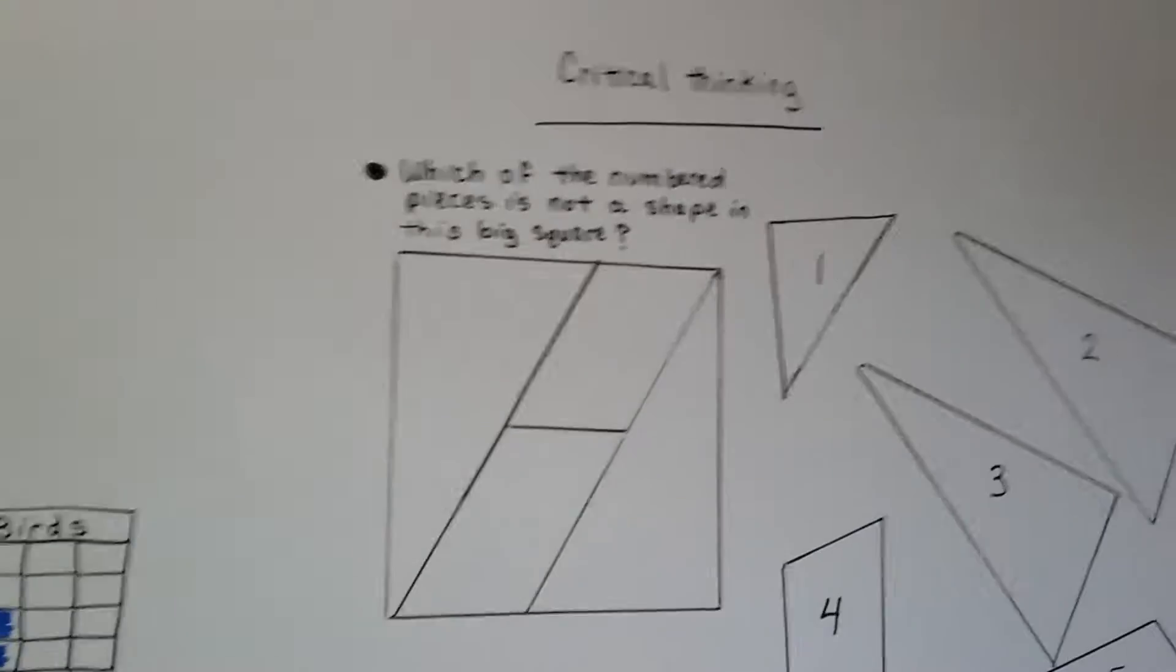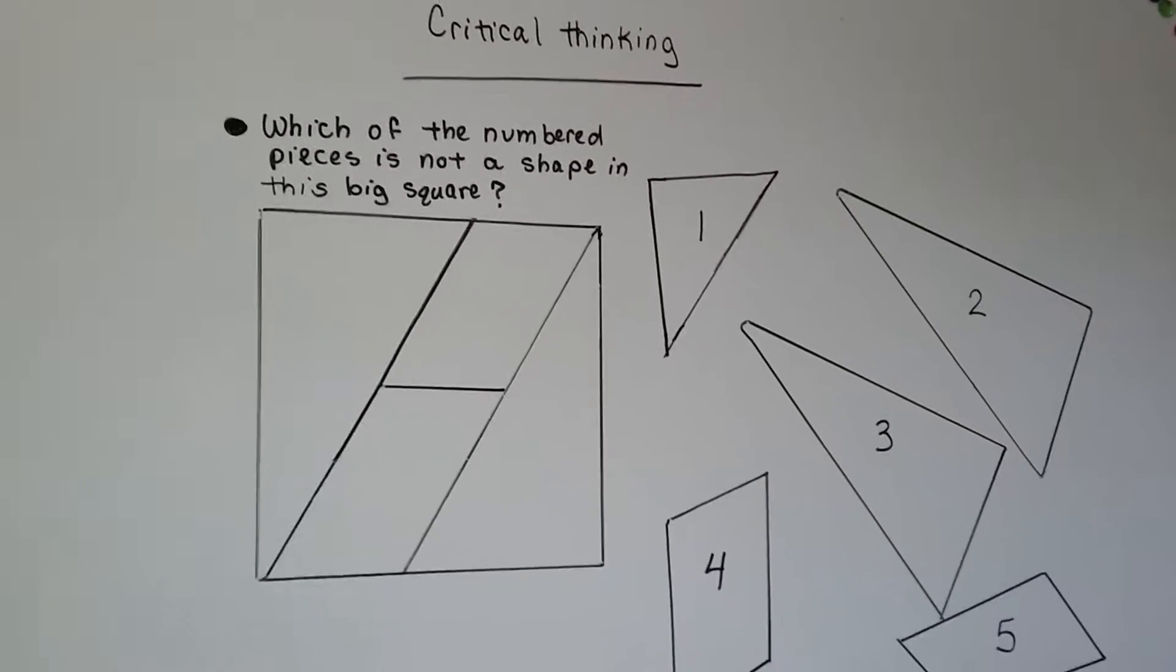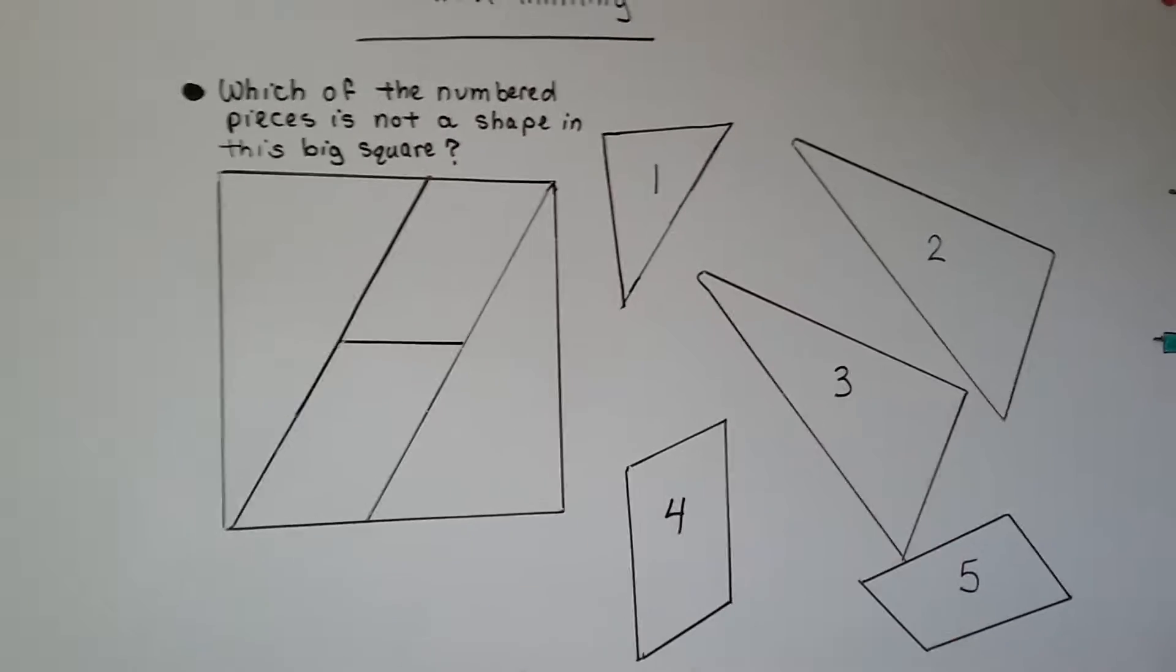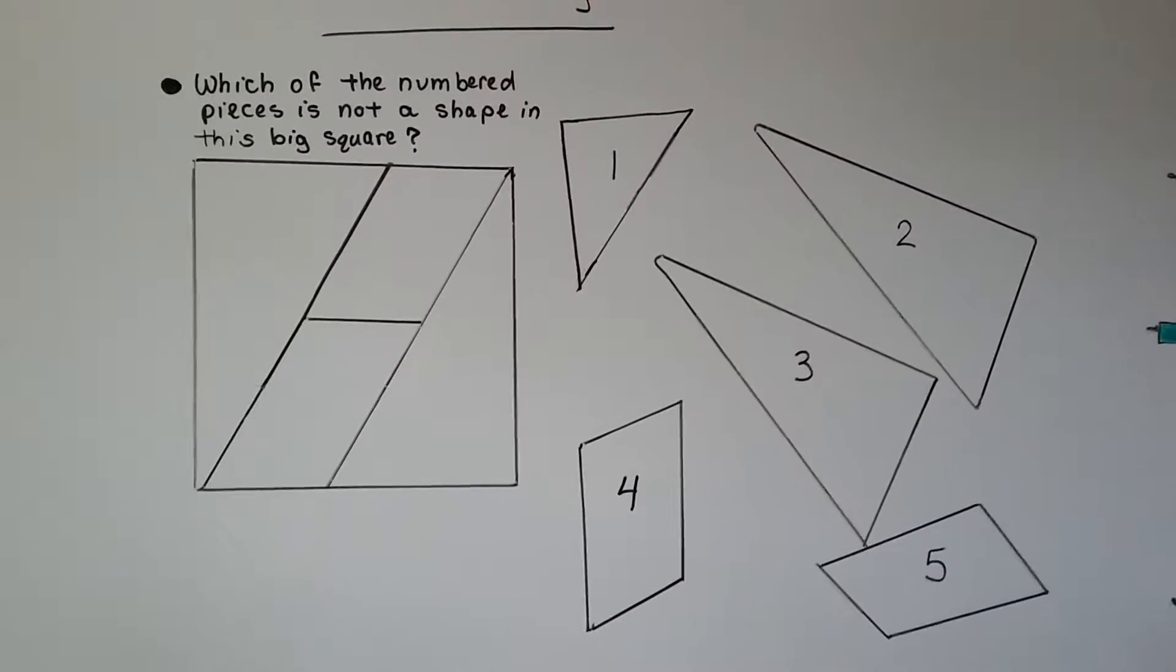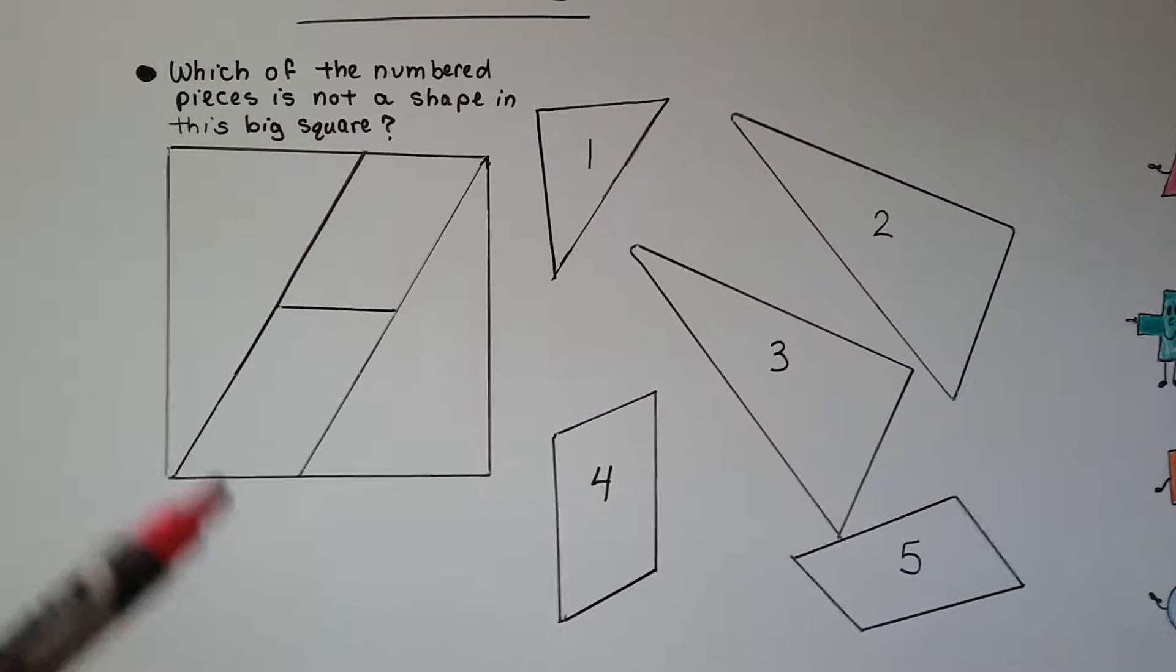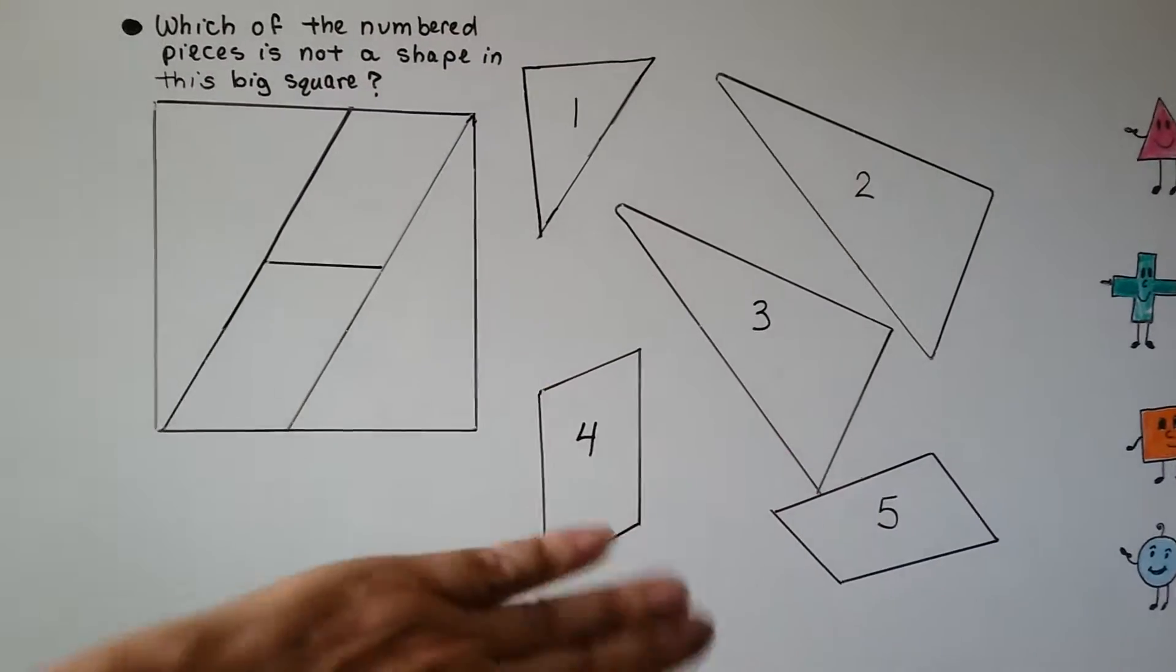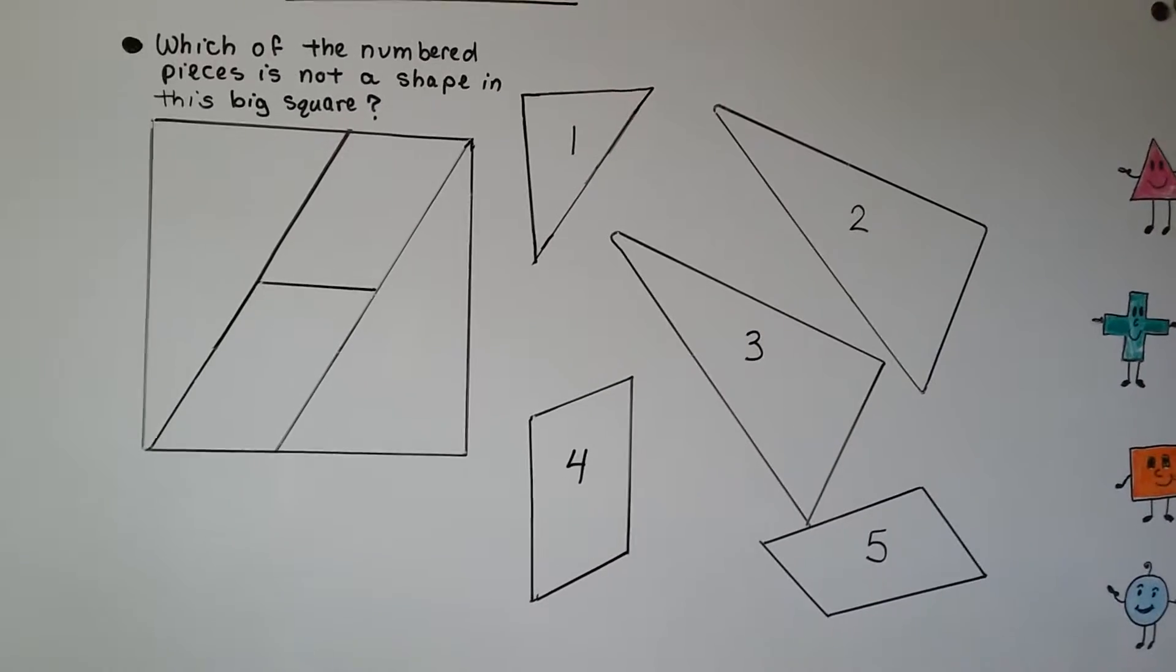Okay, let's try some critical thinking. Which of the numbered pieces is not a shape in this big square? So I've got five numbered pieces here and I've got this big square. So which one of these pieces doesn't belong? Which one did not fit into the square? Can you tell? Can you look at them and kind of turn them in your mind and just think about what they would look like turned or flipped? Can you see how they would fit into that square?